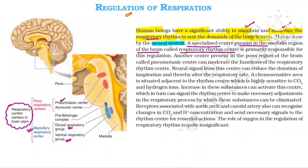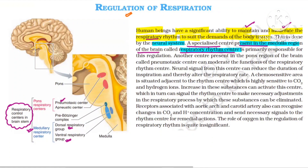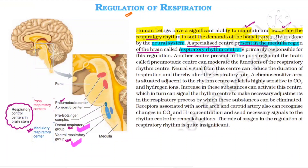The specialized centers present in the medulla region of the brain are called the respiratory rhythm center. So if they ask the question, your answer is: respiratory rhythm centers are present in the medulla region. They are the ones regulating the respiratory rhythm — that is why their name is 'rhythm center.' The respiratory rhythm centers are the dorsal respiratory group and ventral respiratory group.